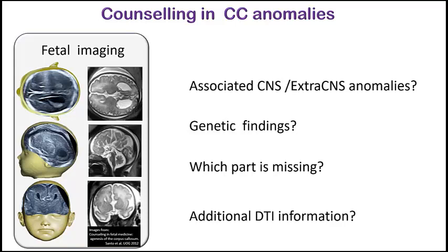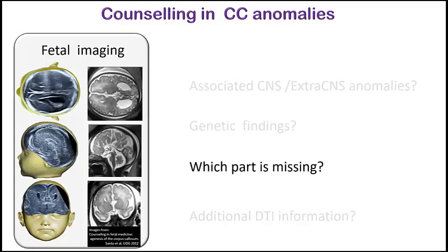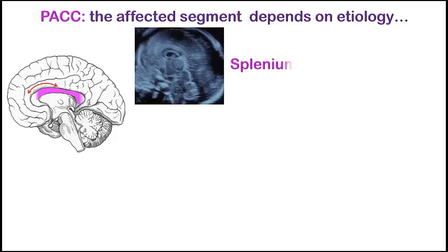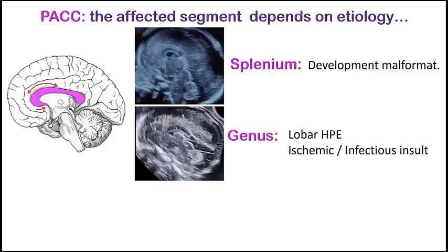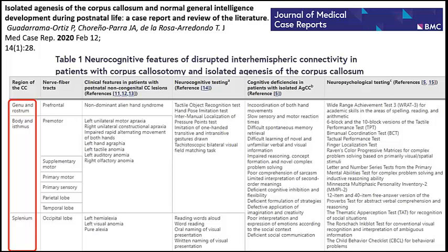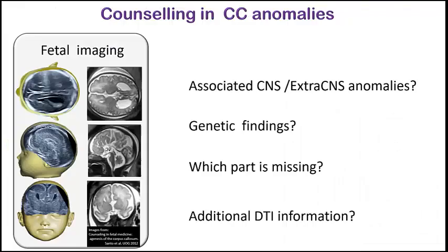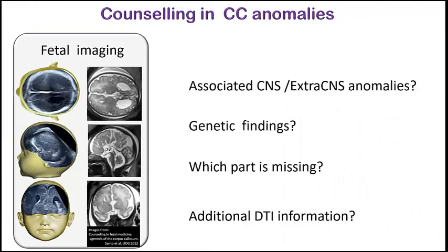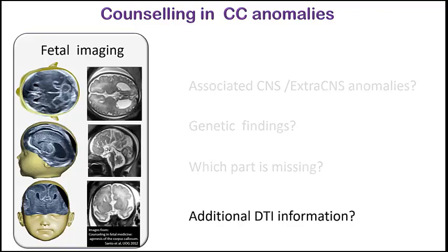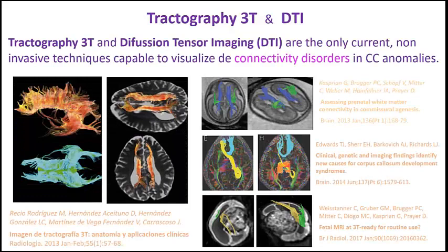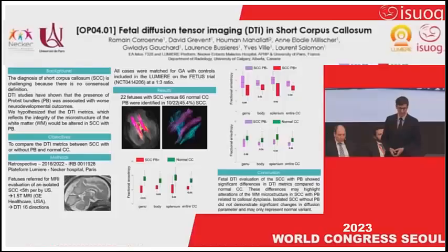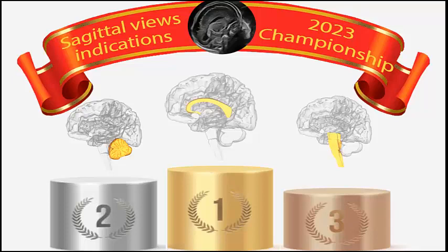For correct counseling in cases of partial agenesis, we will probably need to consider which part is affected. Not only because, due to the bidirectional development of the corpus callosum, we can presume the more likely etiology depending on the missing part, but also because some studies suggest that depending on the region of the corpus callosum affected, we may expect different types of neurocognitive impairment. In the near future, 3 Tesla tractography and diffusion tensor imaging — the only non-invasive techniques for visualizing connectivity disorders — may provide crucial additional information for better counseling.